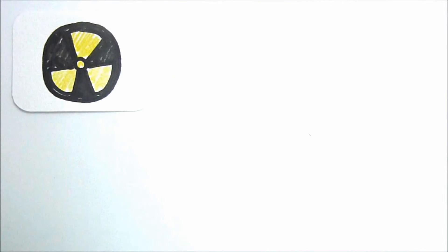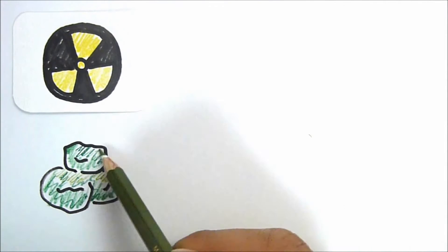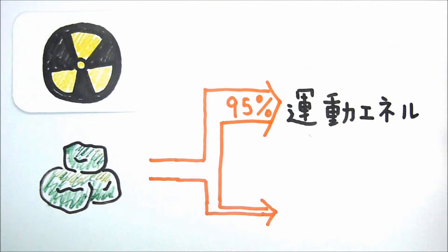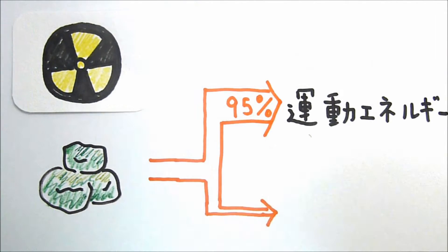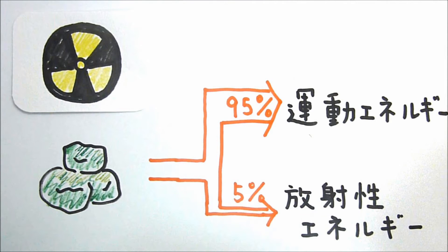Nuclear energy is generated by splitting atoms of uranium in a process called nuclear fission. 95% of that energy is kinetic, while the remaining 5% is radioactive.